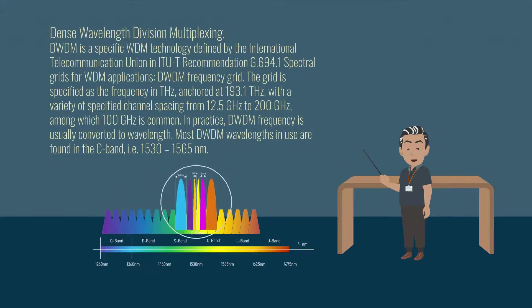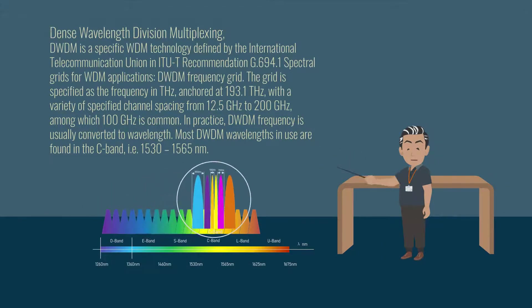DWDM frequency is usually converted to wavelength. Most DWDM wavelengths in use are found in the C band, that is 1530 to 1565 nanometers.